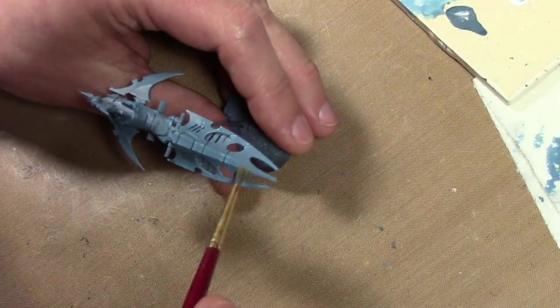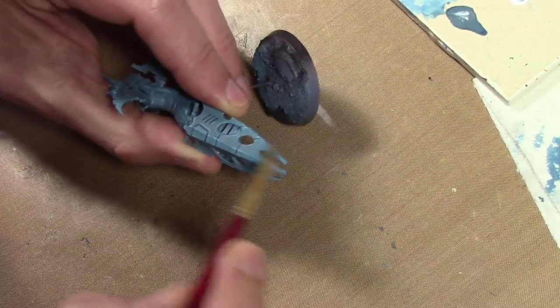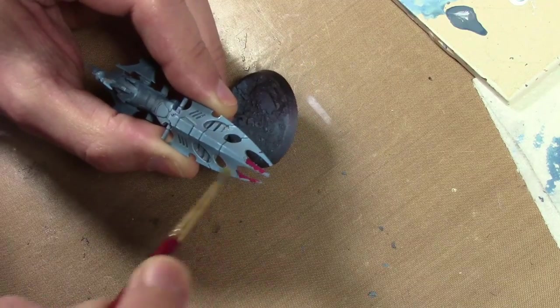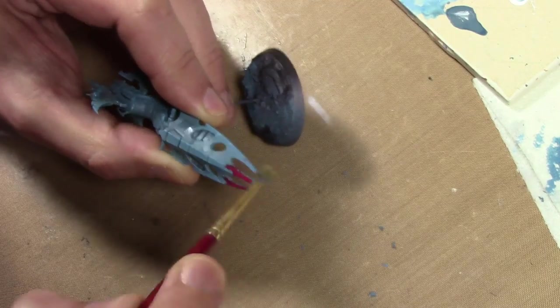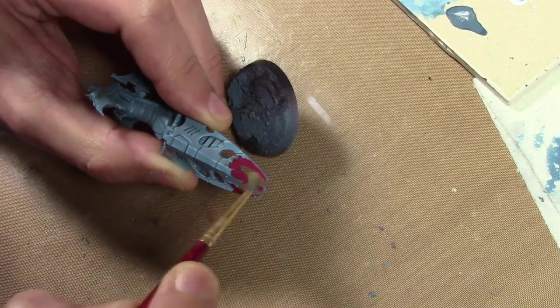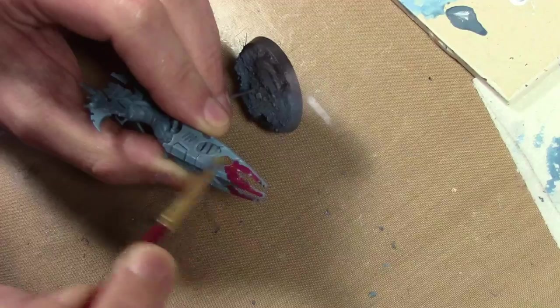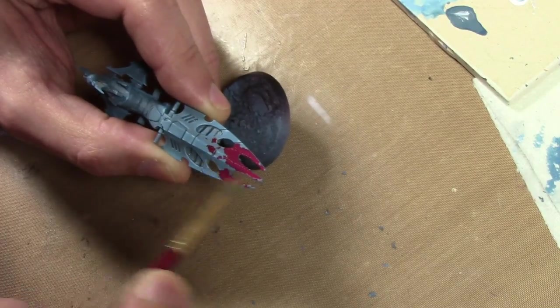And now for the fun part, chipping the paint. I already let some water soak into the model for about a minute off camera to save time. And I'm just removing the blue to expose the previous red just on the front of the bike and along the wing tips.